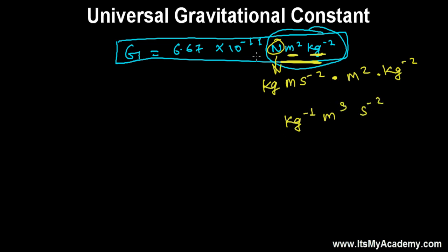So the dimensional formula of universal gravitation constant is M minus 1, meter - that is L cube, second that represents time - so time minus 2. This is the universal gravitation constant's dimensional formula.